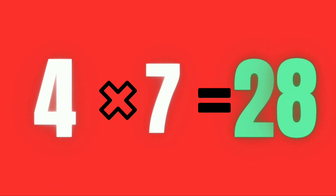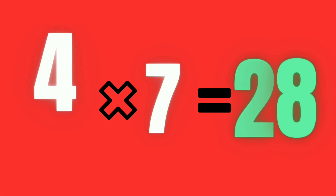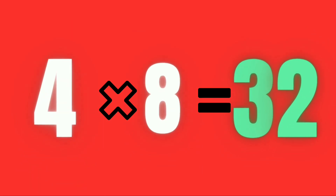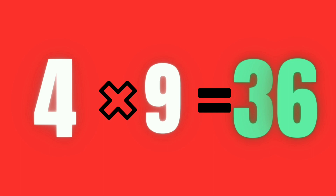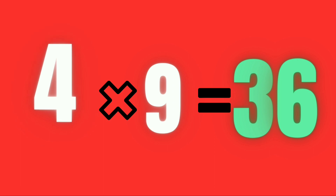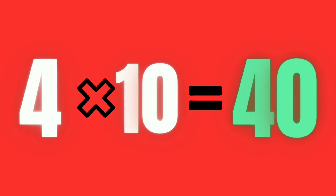Four sevens are twenty-eight. Four eights are thirty-two. Four nines are thirty-six. Four tens are forty.